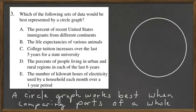Which of the following sets of data would be best represented by a circle graph? The percent of recent United States immigrants from different continents, the life expectancies of various animals, college tuition increases over the last five years for a state university, the percents of people living in urban and rural regions in each of the last six years, and the number of kilowatt hours of electricity used by a household each month over a one-year period.